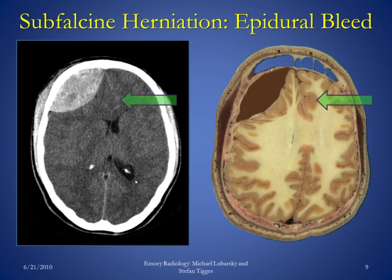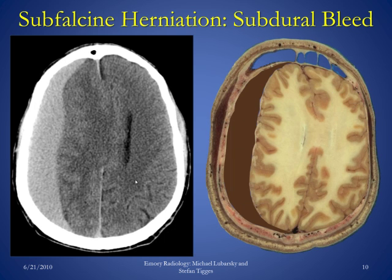This image demonstrates a very similar appearance as a result of an epidural hematoma, where we have subfalcine herniation, also known as midline shift. This is another example of subfalcine herniation as a result of a subdural hematoma. The brain is displaced to the left and the right ventricle is compressed by this mass effect.